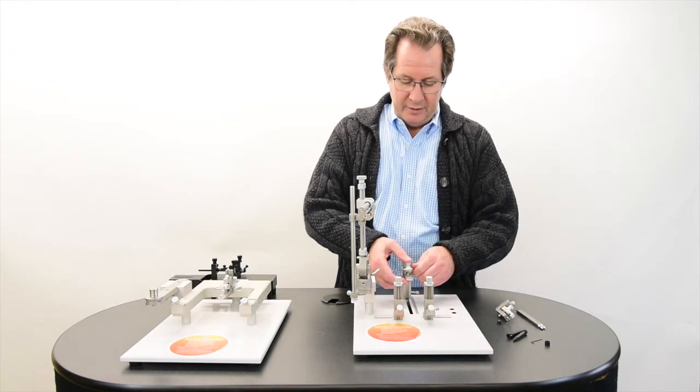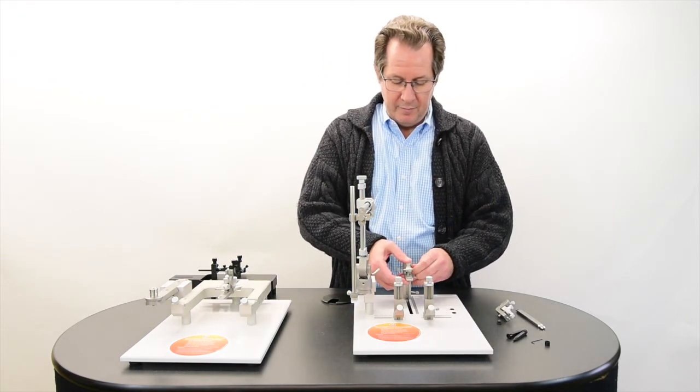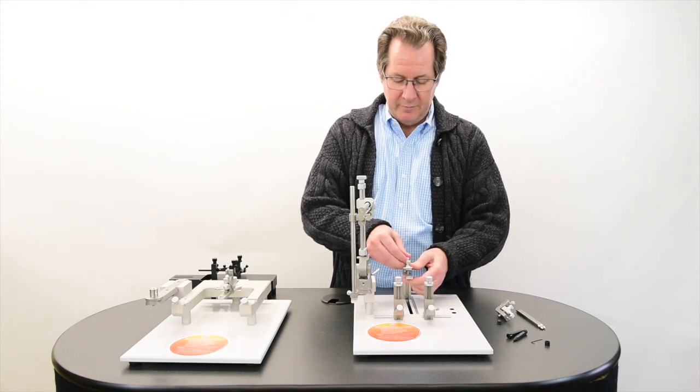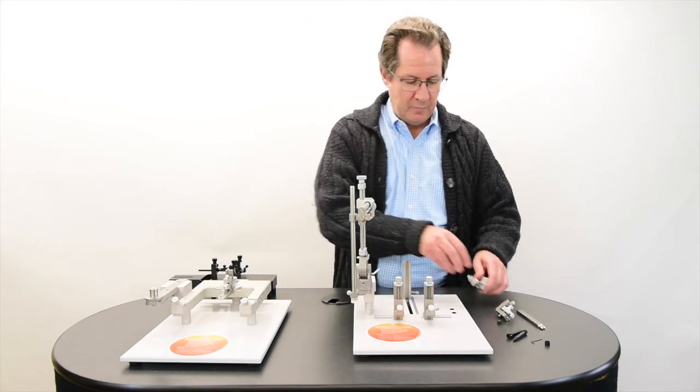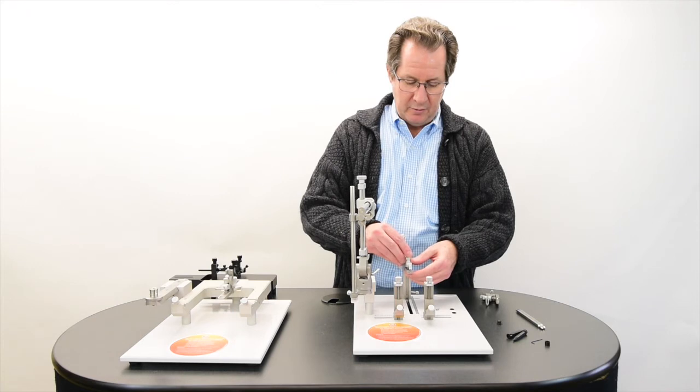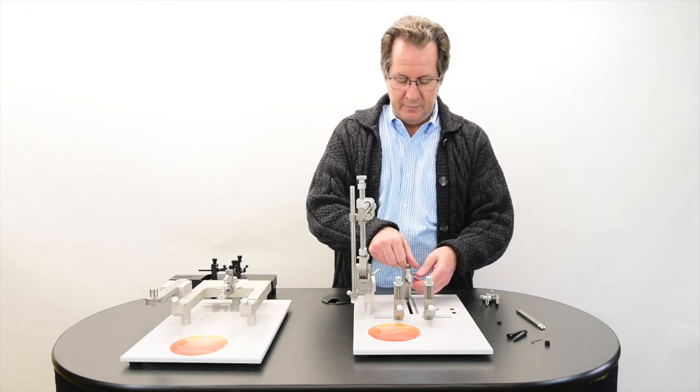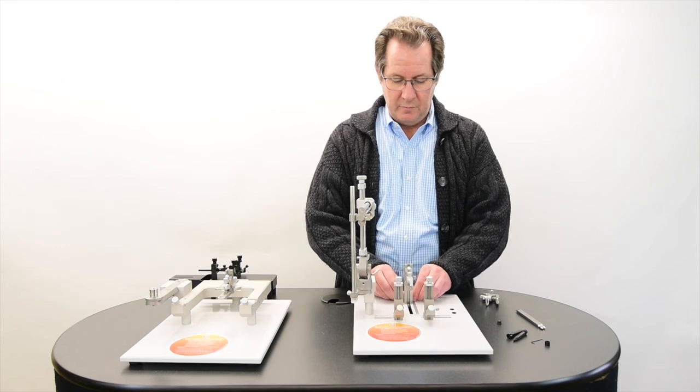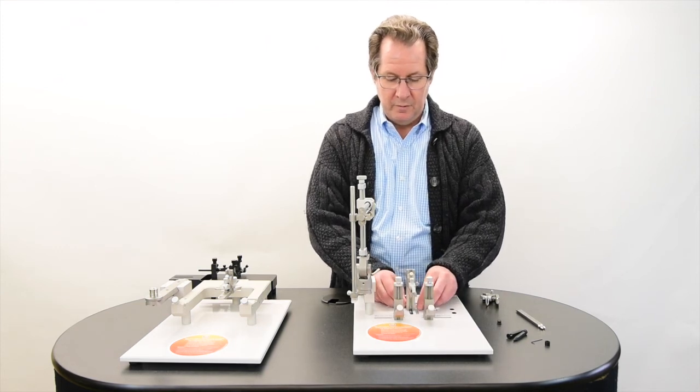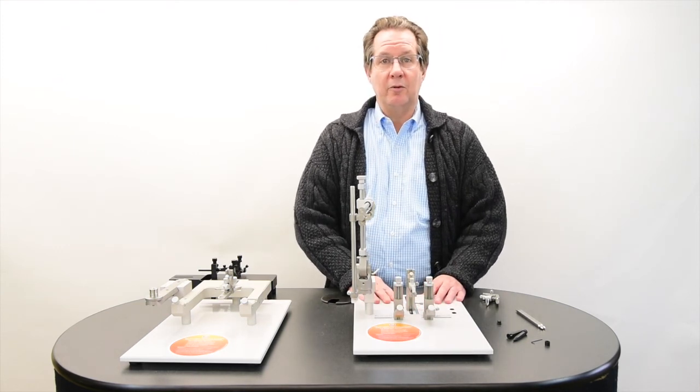And then the other part is to simply remove the rat adapter from the vertical post and simply now all you have to do is place the mouse adapter, tighten it down forward, and now you're ready to go for mice.